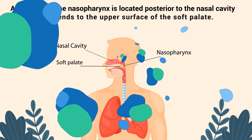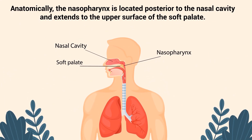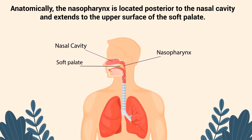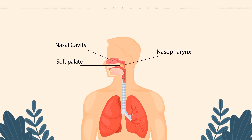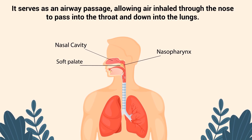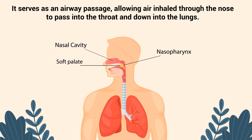Anatomically, the nasopharynx is located posterior to the nasal cavity and extends to the upper surface of the soft palate. It serves as an airway passage, allowing air inhaled through the nose to pass into the throat and down into the lungs.